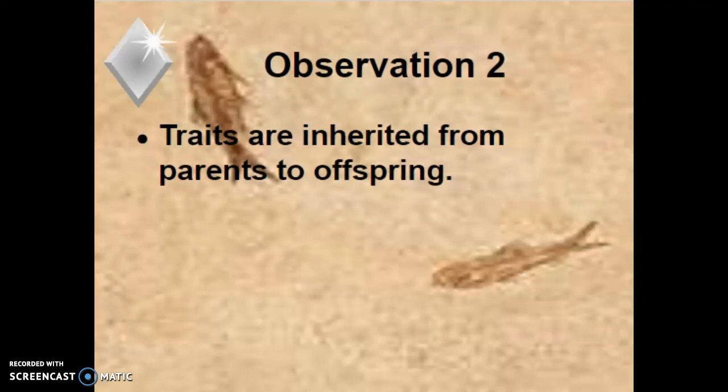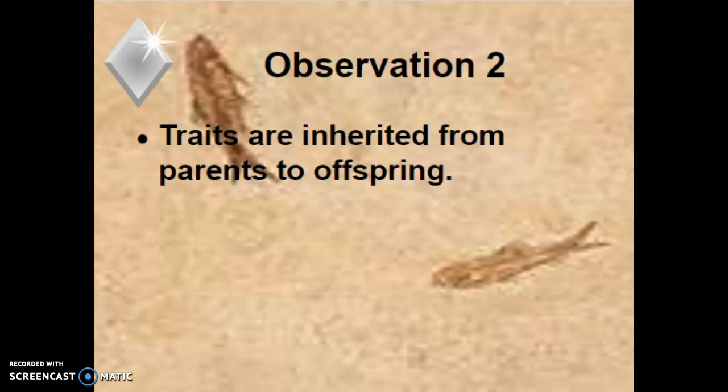Observation two: remember we're talking 1858, before Mendel has even done his research — about five or six years before, and 40 years before Mendel's research was rediscovered and widely accepted. So Darwin doesn't know anything about Mendelian genetics. He just says somehow, some way, traits are passed from parent to offspring. He doesn't know if it's protein or what is being passed, but he recognizes there is something genetic.